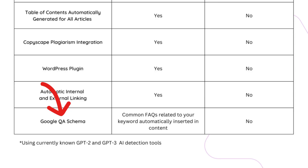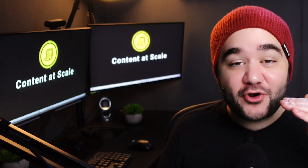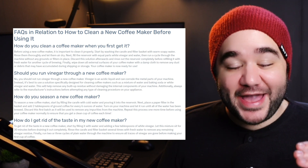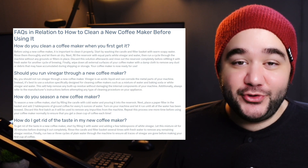What about Google question and answer schema? At the time of this recording, Jasper simply doesn't pull in that information. Content at Scale, on the other hand, inserts FAQs directly into your articles based on your keyword. This means your articles will include straight-to-the-point answers for any questions your users or readers might want to know.